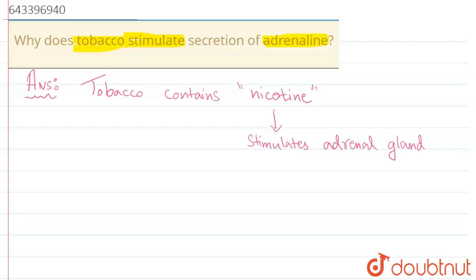Now what is the function of adrenal gland? Adrenal gland secretes adrenaline and noradrenaline. Both are in fact secreted by adrenal gland.